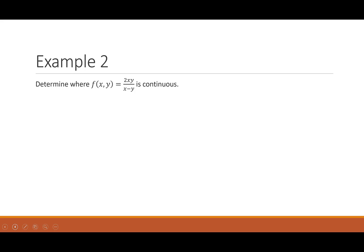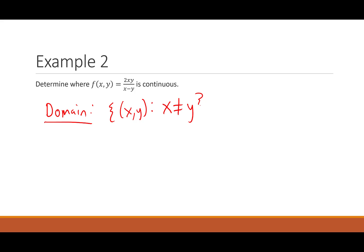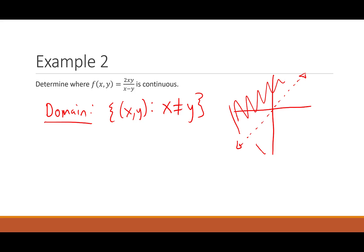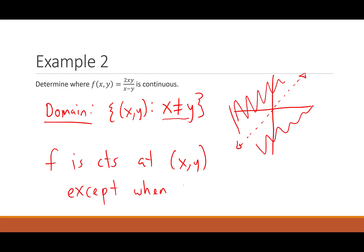Let's spice it up. Suppose we're dealing with f(x, y) = 2xy/(x − y). This is a rational function, so it's continuous on its domain. What's the domain? We're dividing by x − y, and the only number we can't divide by is 0. So the domain is all points (x, y) such that x ≠ y — graphically, all of R² except for the diagonal line. So f is continuous at every (x, y) except when x equals y.